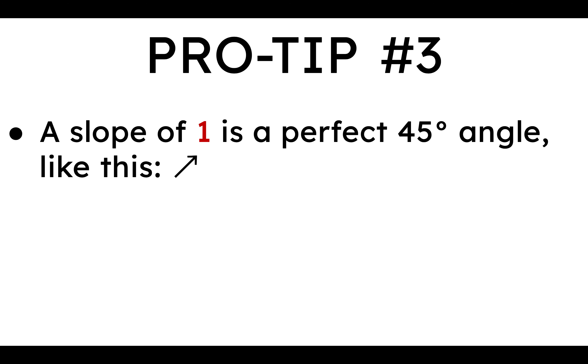Pro tip number 3, a slope of 1 is a perfect 45 degree angle. So this line, which is supposed to look like it's not straight up, not vertical, it's like halfway between them, that's a slope of 1. So y is equal to x plus b, m is just 1.